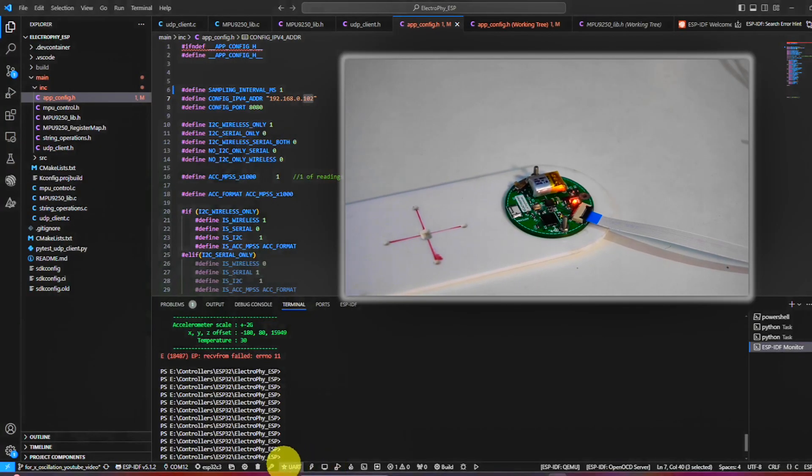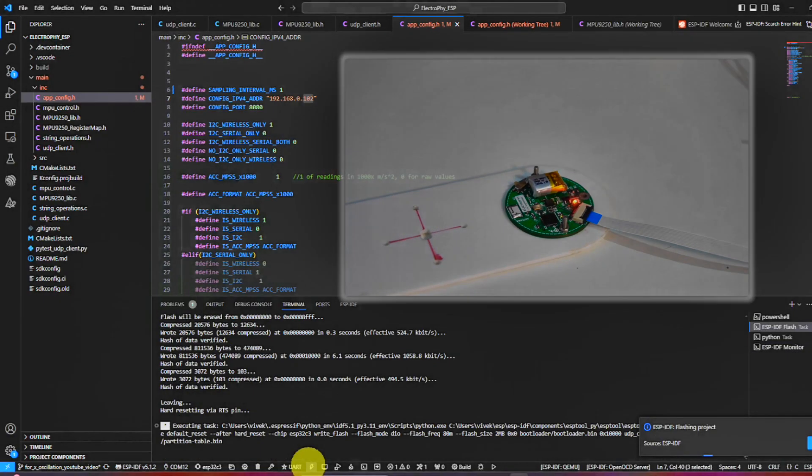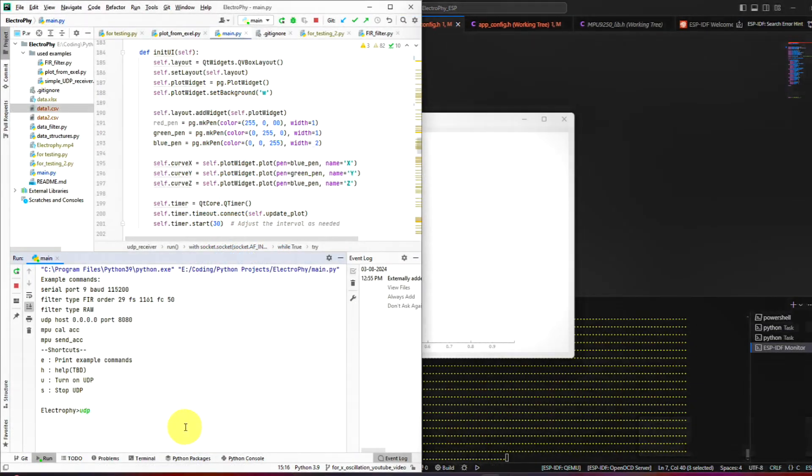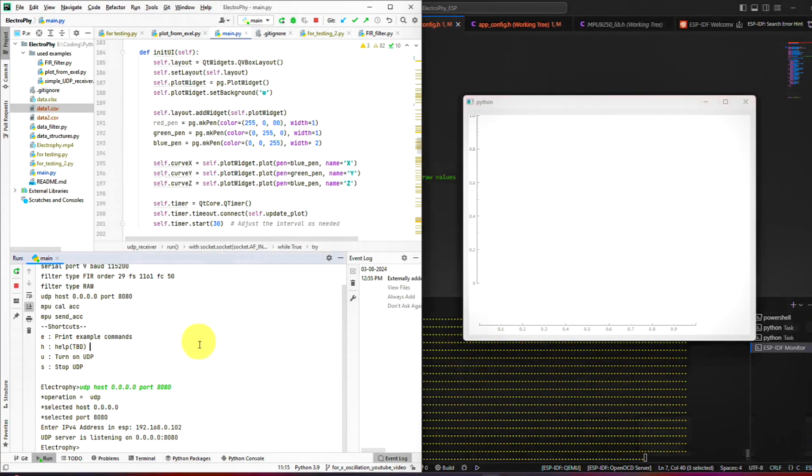I'll upload the program, set it on a flat surface for calibration, and while that's happening, let's start our receiver program on the computer. We'll create a UDP server, and then ask Electrofy to send accelerometer data.